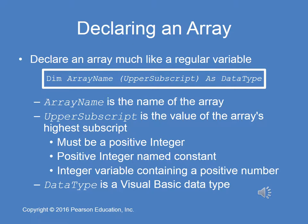Next, we're going to learn how to declare an array. You declare an array similarly to a regular variable except for its upper subscript value. We use the dim keyword, we give the array a name — in this case, array name is the name of the array. The upper subscript is the value of the array's highest subscript; it has to be a positive integer or a positive integer named constant. You can't use a variable because once it's declared, this cannot change. And data type is a Visual Basic data type.